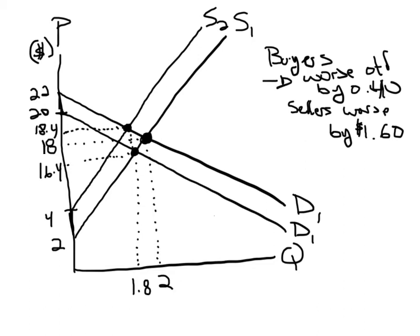How worse off are the sellers? Well, the sellers are worse off by $1.60, because before they were receiving effectively $18, but now they're only receiving $18.40 minus $2, they're effectively only getting $16.40 every time they sell a unit, which is $1.60 less than it was before.